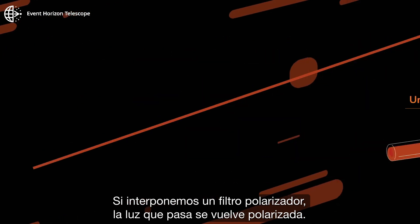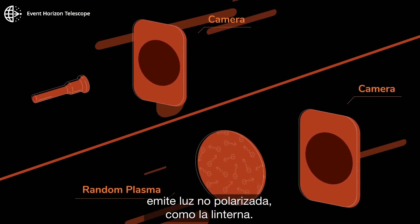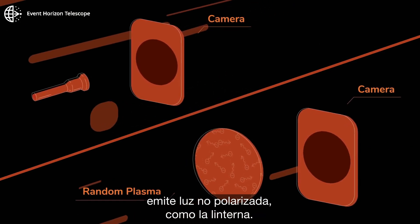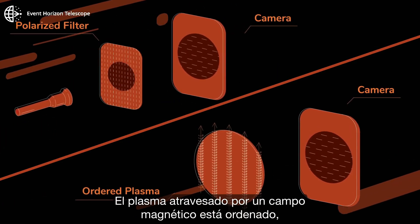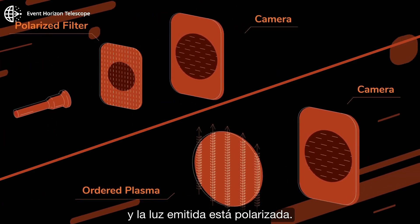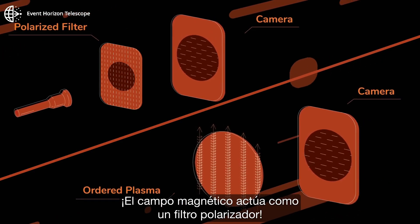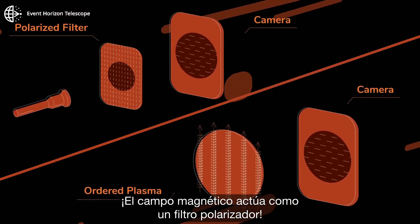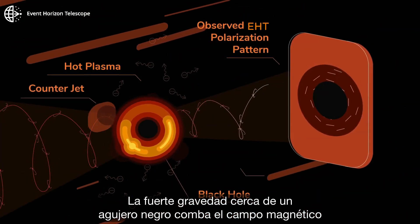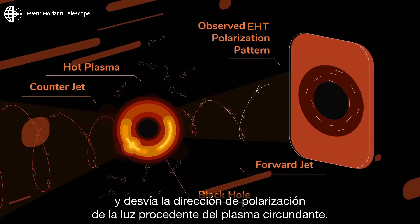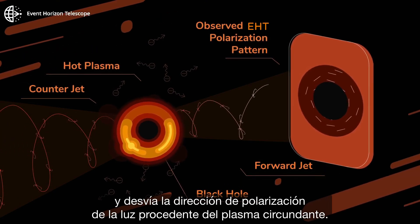In space, randomly moving hot gas or plasma emits unpolarized light, like the torch. Plasma threaded by a magnetic field is ordered and the emitted light is polarized — the magnetic field acts as a polarized filter. The strong gravity near a black hole bends the magnetic field and twists the polarization direction of the light from the surrounding plasma.